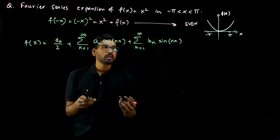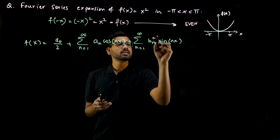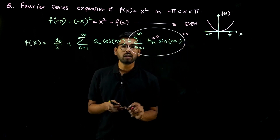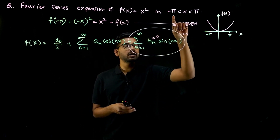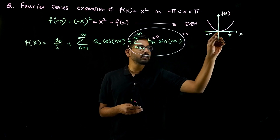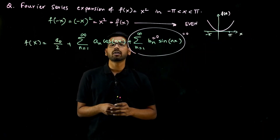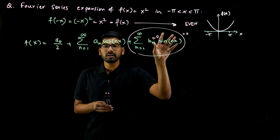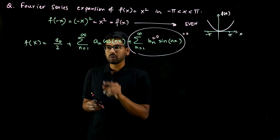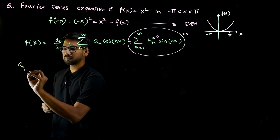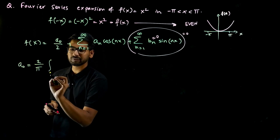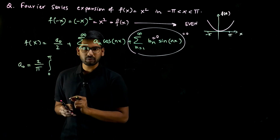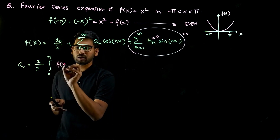Why was this necessary? Because for even functions bₙ is equal to 0. So the entire sine term is equal to 0 if f of x is even, and this is only the case when the interval is on either side of the x-axis. If your interval is from 0 to 2 pi, we have to find a₀, aₙ, and bₙ all the time. But in this case it is from minus pi to pi and the function is even, so bₙ is 0. So a₀ is equal to 2 by pi, integration from 0 to pi of f of x dx, and aₙ is 2 by pi, integration from 0 to pi of f of x cos nx dx.